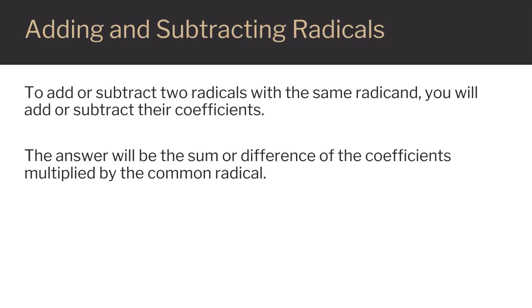To add or subtract two radicals with the same radicand, you will add or subtract their coefficients. The answer will then be the sum or difference of the coefficients multiplied by the common radical.